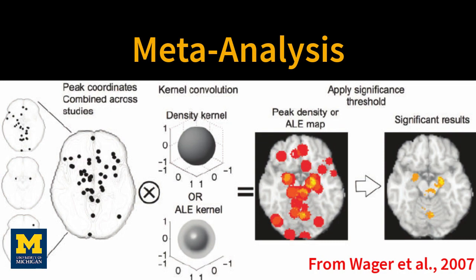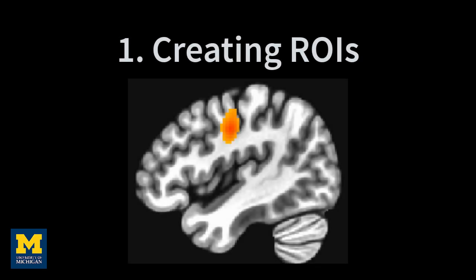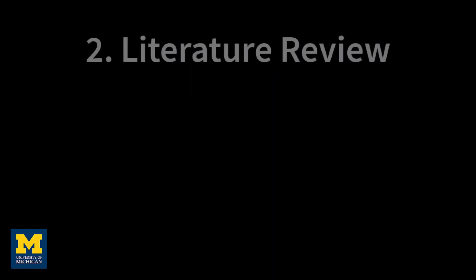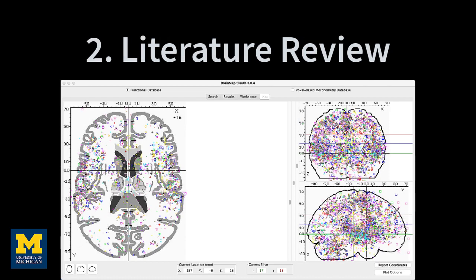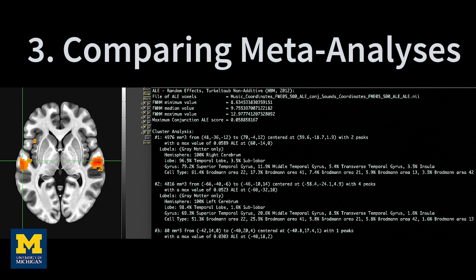This is useful for many different purposes. One, you can create an independent region of interest for your own study, using the meta-analysis map or a sphere around the peak as your mask. Two, you are able to form an accurate idea of where you are likely to find your results, or to compare results you've already obtained to other published studies. And lastly, you can compare different sets of meta-analyses to see where there is significant overlap or where there are significant differences between them.